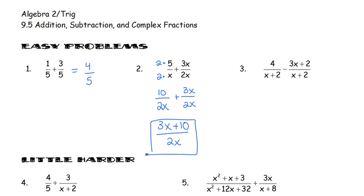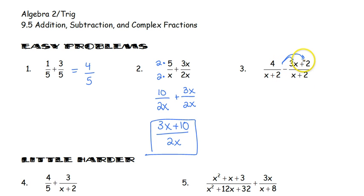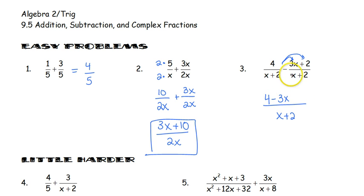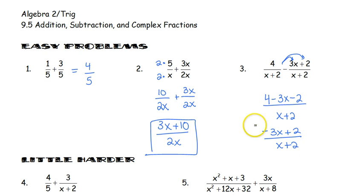When we look at number 3, the denominators are both x plus 2, so we want to do 4 minus that quantity. Subtraction can be a little bit trickier because we want to make sure we're subtracting that entire thing. We've got to distribute that negative to the 3x and to the 2. So our numerator becomes 4 minus 3x minus 2, which simplifies to negative 3x plus 2, all over x plus 2.